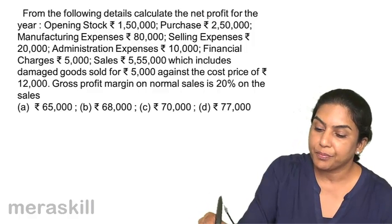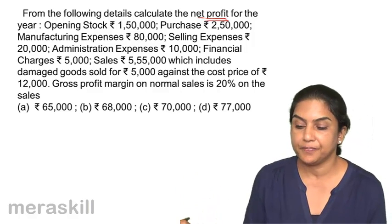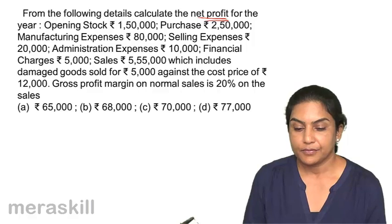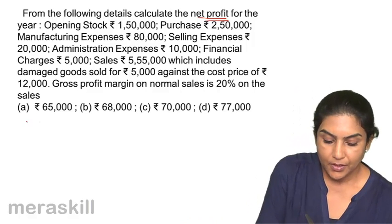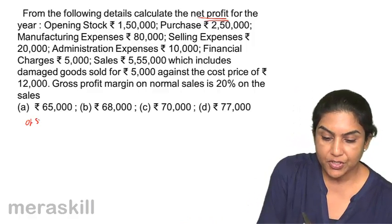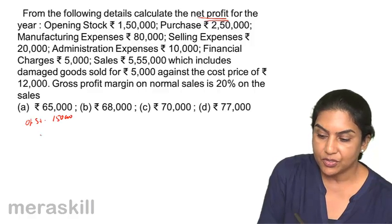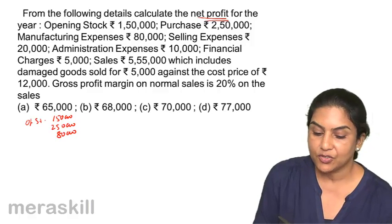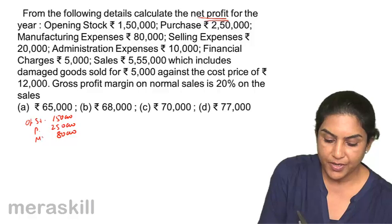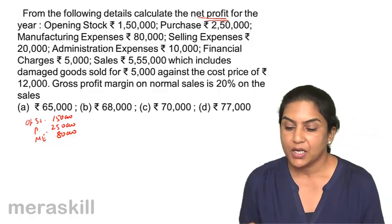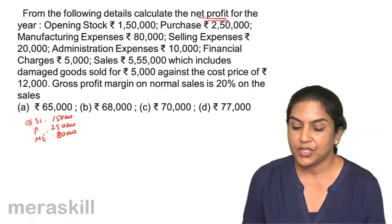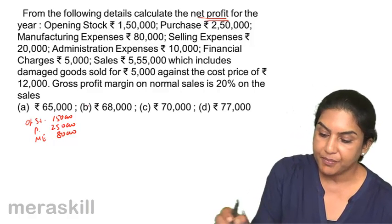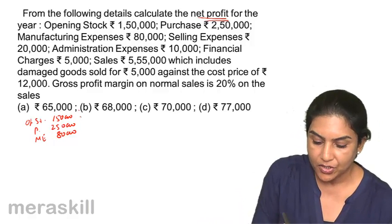We need to compute net profit. What is our gross profit? Opening stock is 1,50,000, purchases are 2,50,000, manufacturing expenses are 80,000. Purchases and manufacturing expenses go to the trading account. Administration and financial charges will go to profit and loss.